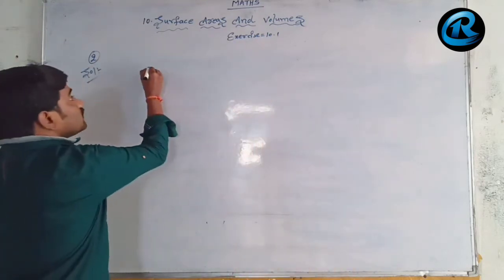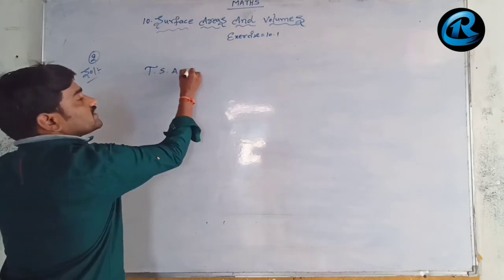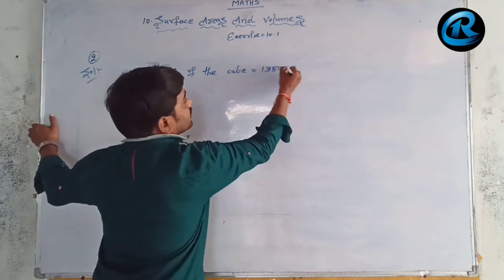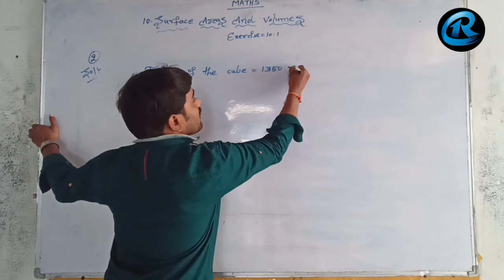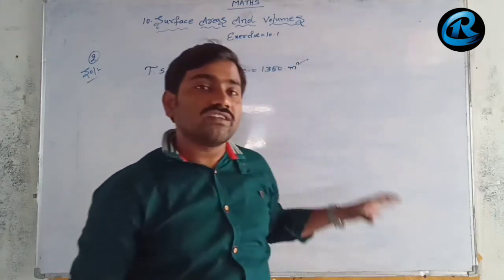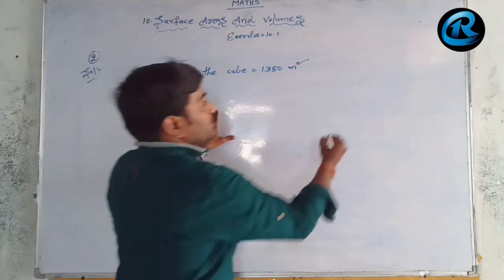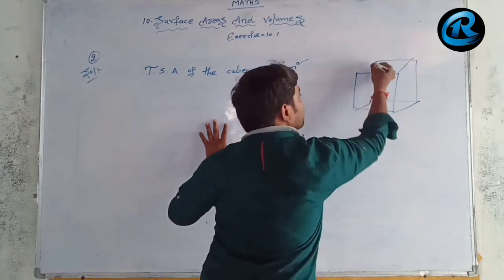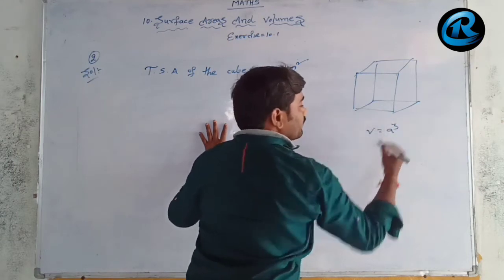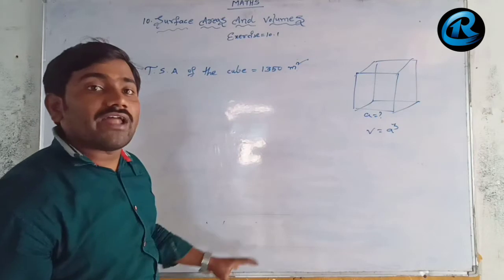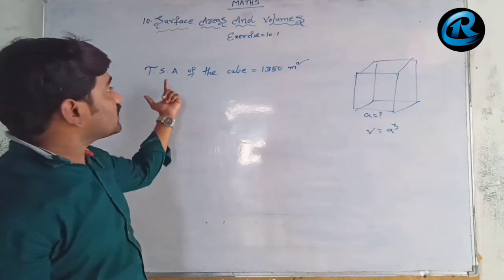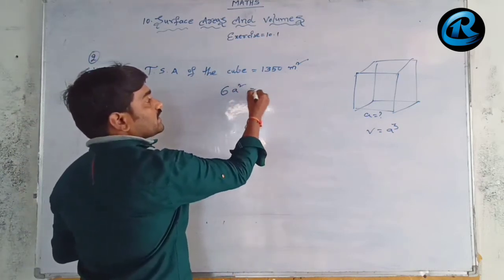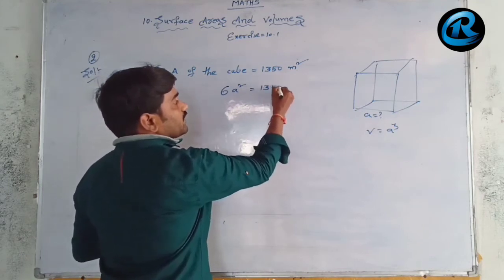Since we know the total surface area and want the volume, first we find side 'a'. Total surface area of a cube = 6a² = 1350 m². Transferring 6 to the right-hand side: a² = 1350 ÷ 6 = 225 m².